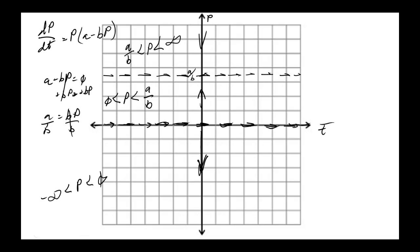This shows the direction the direction fields are going: downhill in the upper region, uphill in the middle, and downhill in the lower region. That's your sign analysis of f(p). The vertical axis showing these arrows is called a one-dimensional phase portrait, and the vertical line itself is called the phase line.